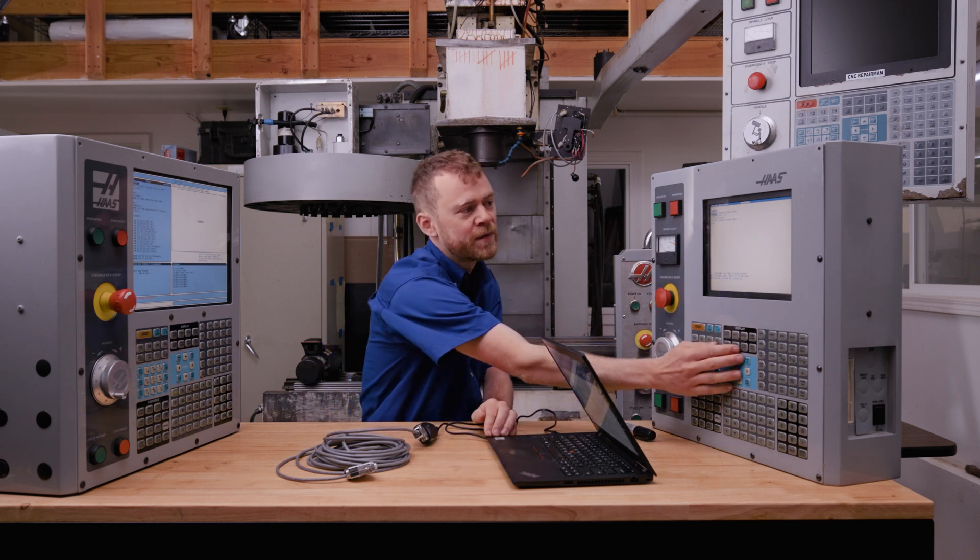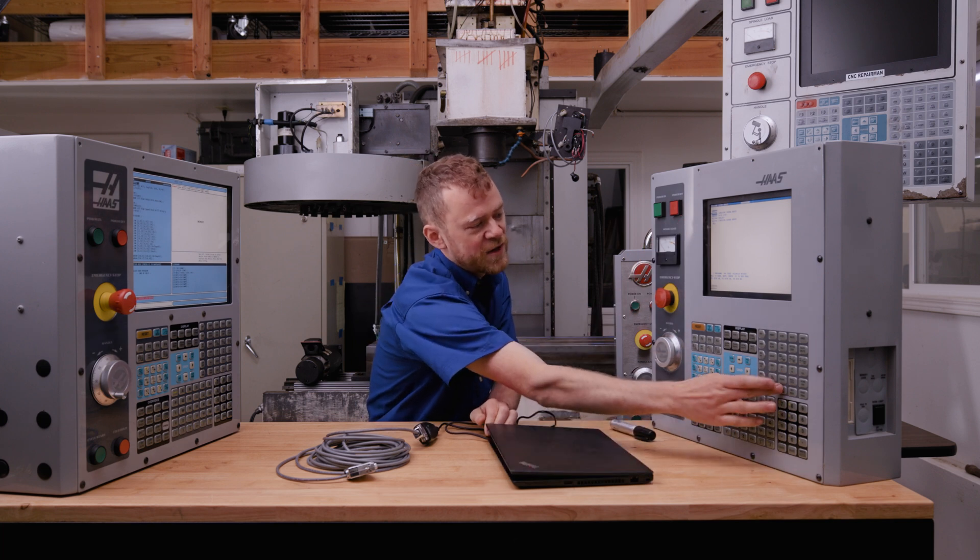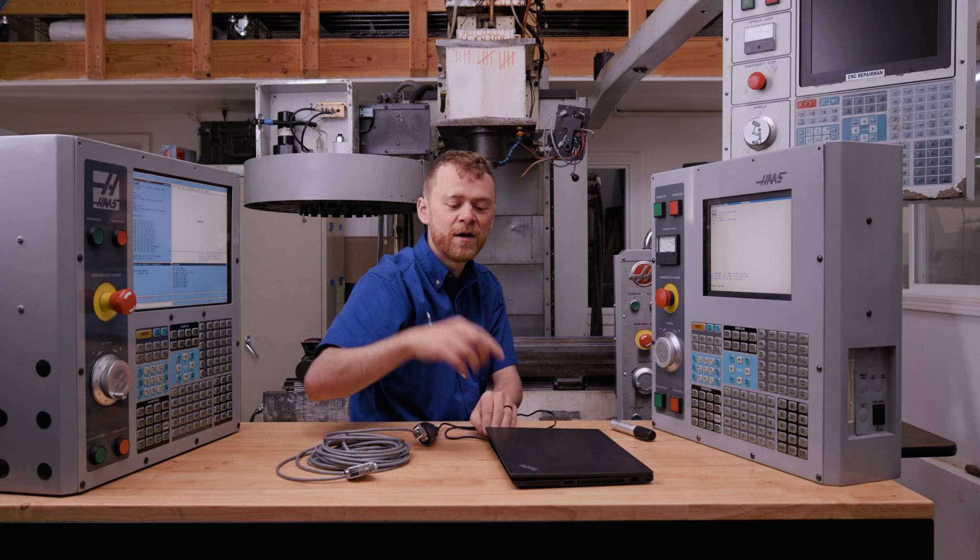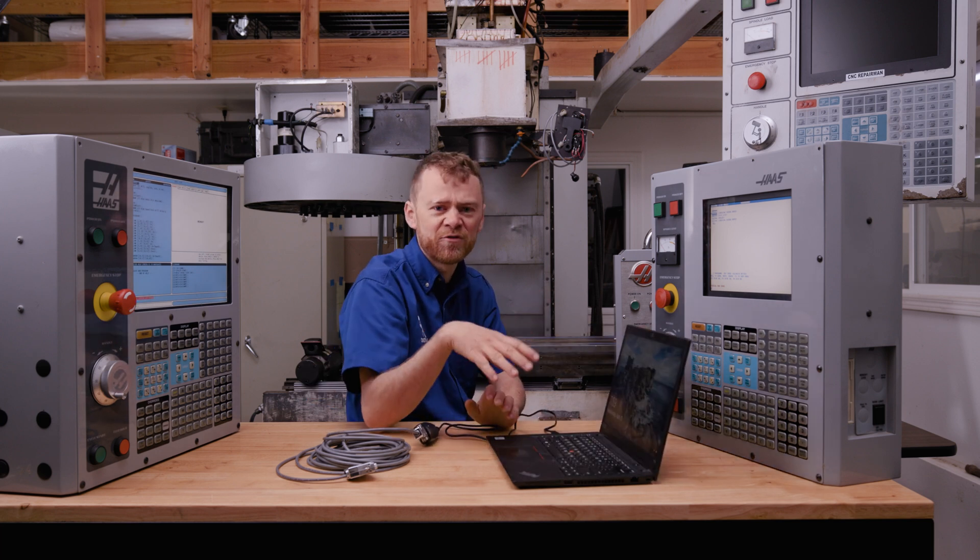So we go to list program, we come in here, we select a program, hit send. Down here at the bottom it'll say send, and then it'll say serial send done. Did it show up on our computer? That's the easiest way to troubleshoot.